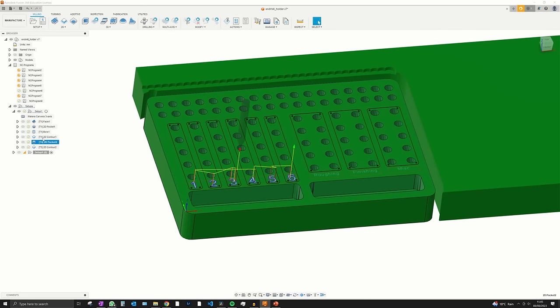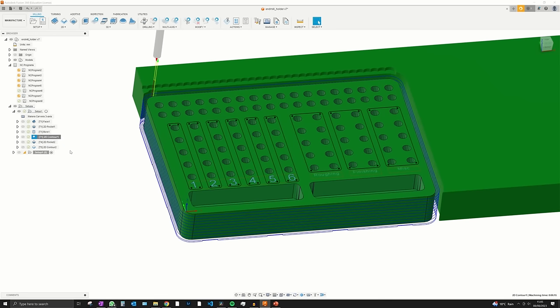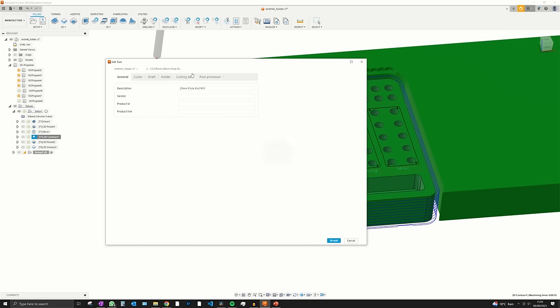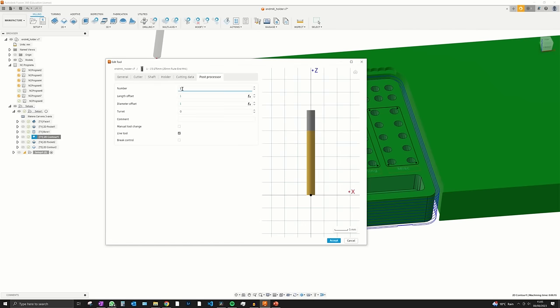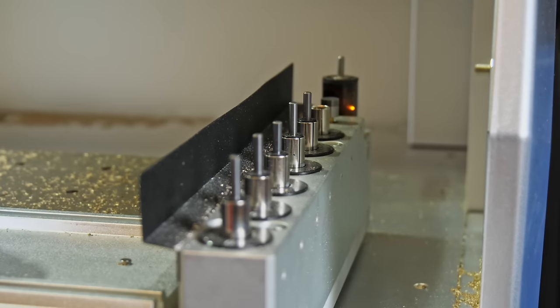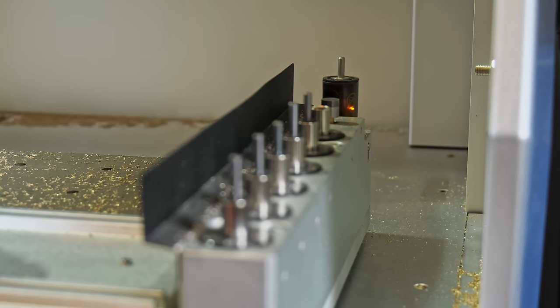It's so easy to program in the tool changes with the post processor, all you have to do is make sure that the tool number that you want to use aligns with the tool number in the post processor. So if I have number 1 here, I need to make sure that this 1/8 inch end mill is in the number 1 slot in the machine.